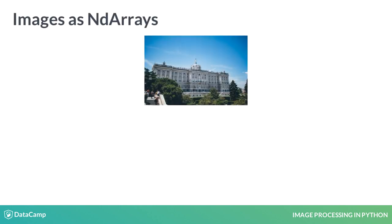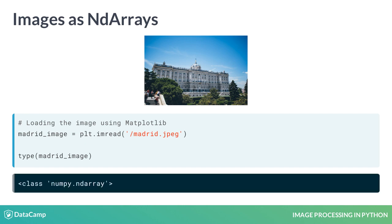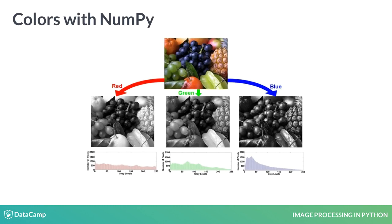Imagine that we have an image and we load it using Matplotlib's imread function. If you check its type using the type Python function, you can see that it's a NumPy ndarray object. Because images can be represented by NumPy multidimensional arrays, also known as ndarrays, NumPy methods for manipulating arrays work well on these images.